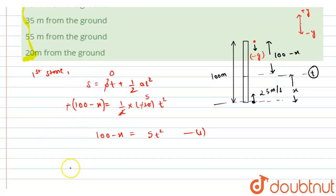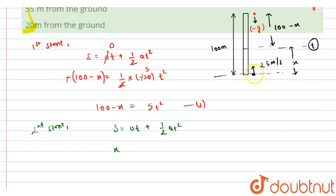Now writing the equation for the second stone, the stone which is going in the upward direction. So again using the same equation of motion s equals ut plus half at square, we will get here s is x only, the displacement of this stone.